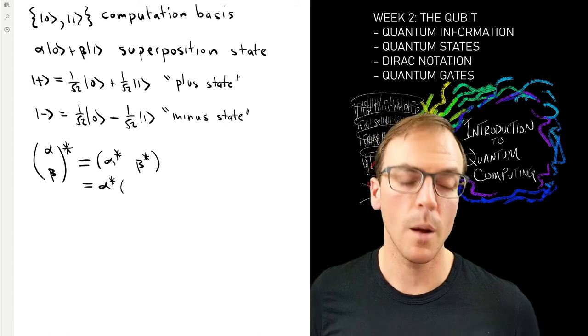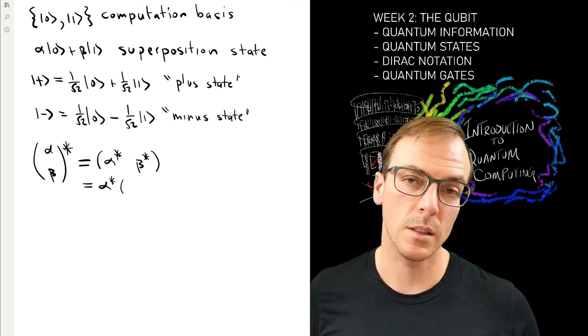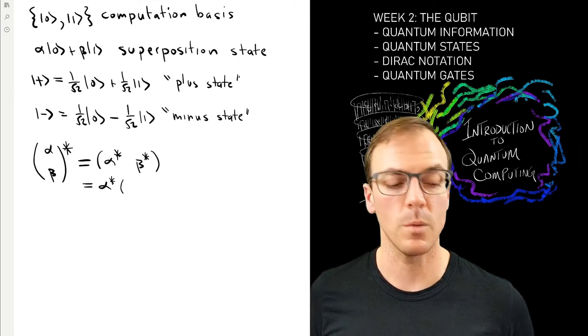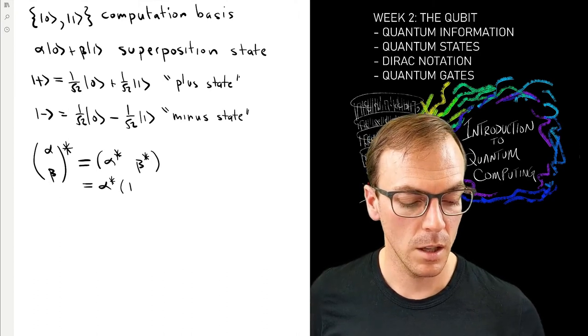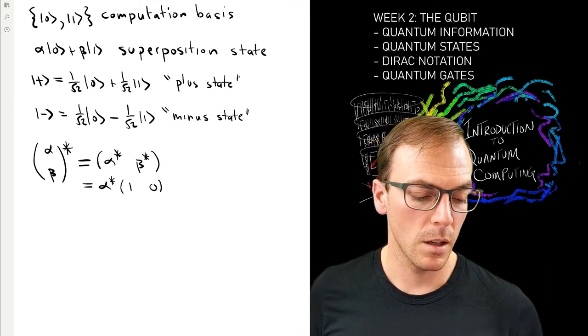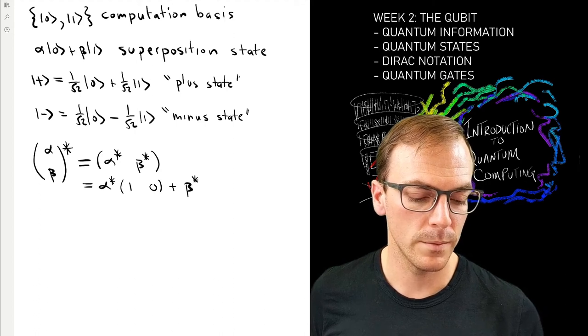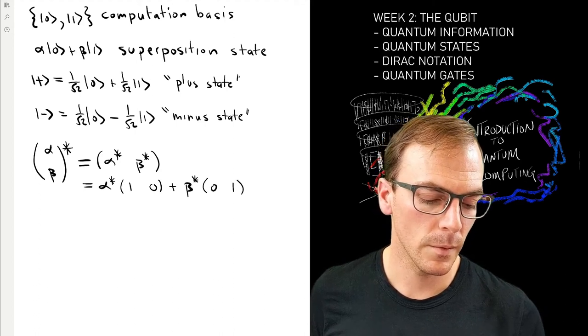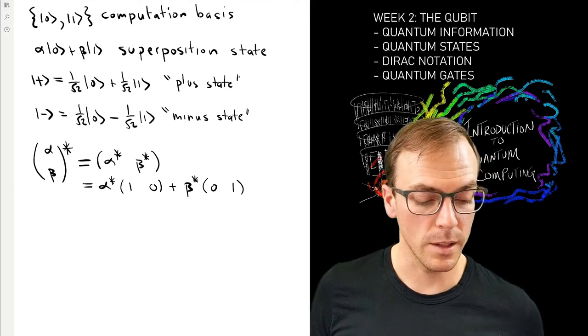You can see that although this new object isn't a vector anymore because originally I said the vector space was these column vectors, they can always be placed in a one-to-one correspondence with them, and we can play the same trick.